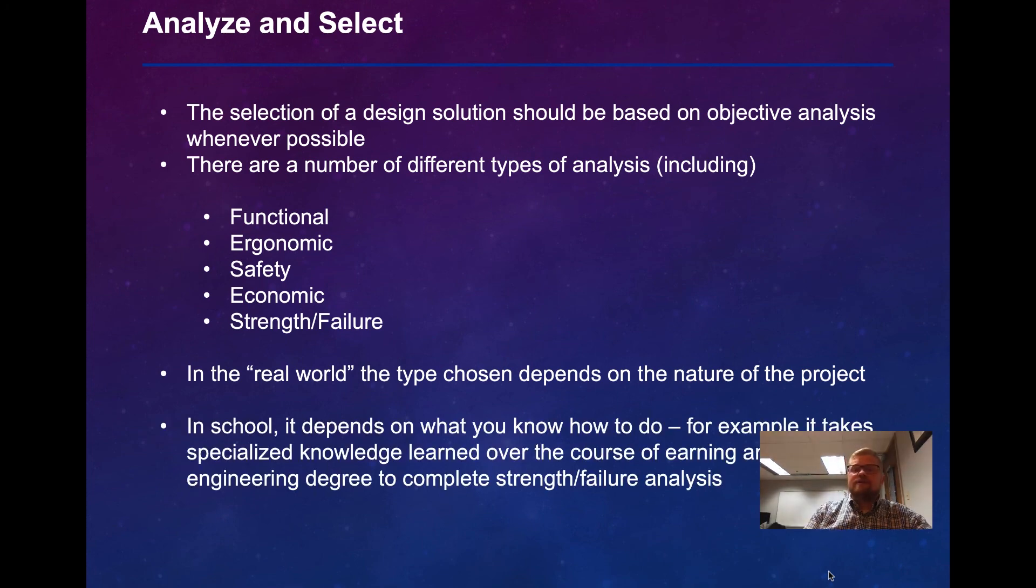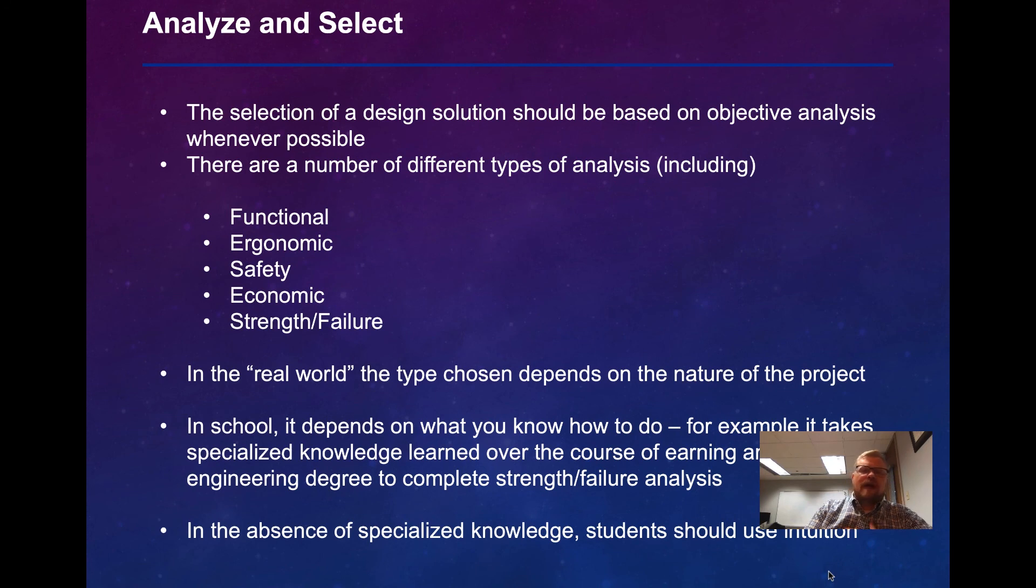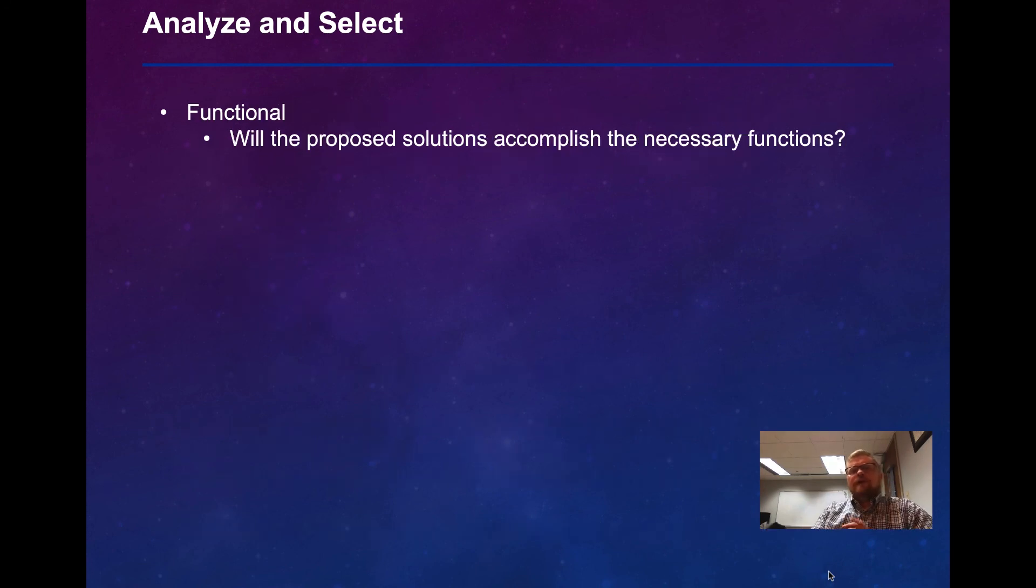In engineering school, on the other hand, it depends on what you know how to do. For example, it takes specialized knowledge learned over the course of earning an engineering degree to complete a strength and failure analysis, or to complete heat dissipation analysis, or finite element analysis. These are all sorts of analyses that an engineer might do, but you have to have the education and background to do those. In the absence of any specialized knowledge, we should use our intuition.